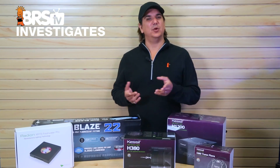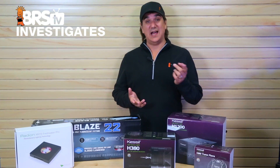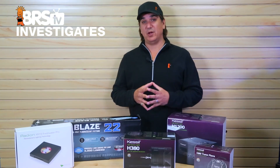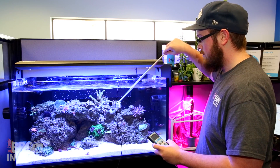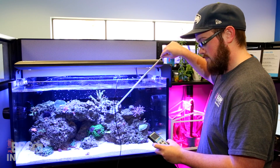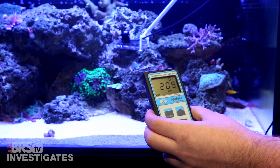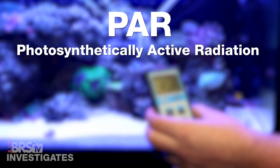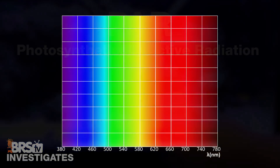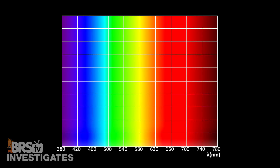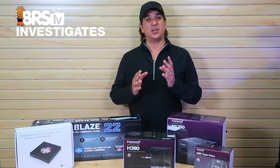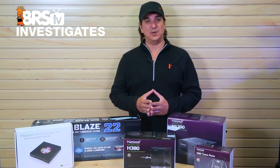First, looking at spectrum and the PUR concept a bit better — PAR generally represents the strength or intensity of the light, but PAR is short for photosynthetically active radiation, which is basically all of the light in the visual spectrum between around 400 and 700 nanometers, ranging from violet to blue, green, yellow, orange and red. All of these spectrums are considered when measuring PAR.